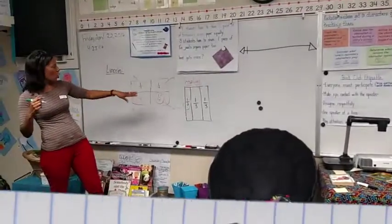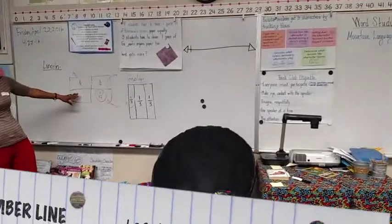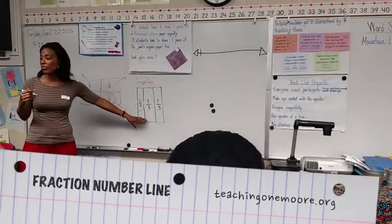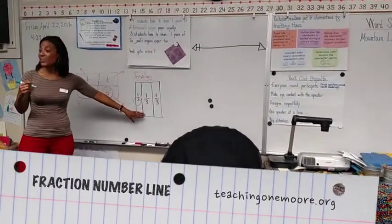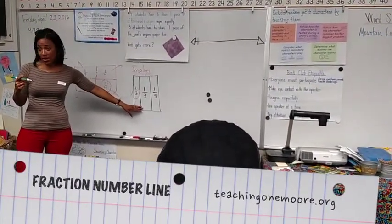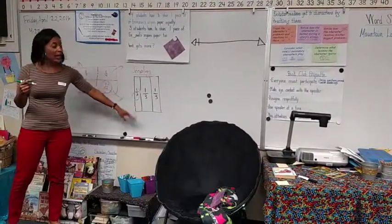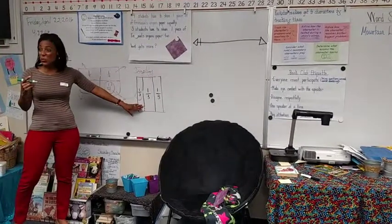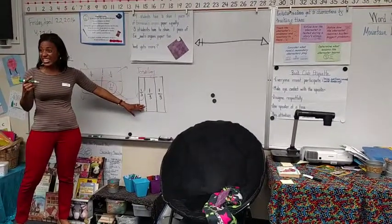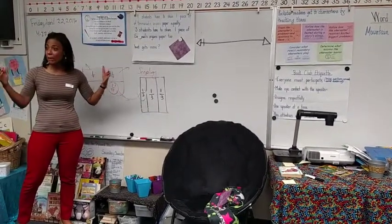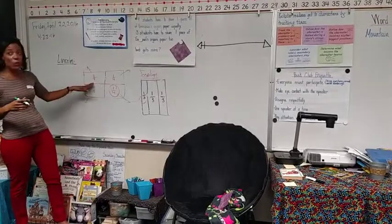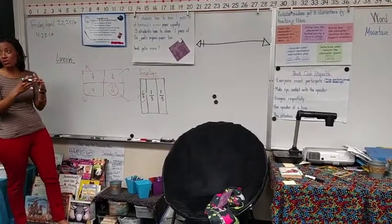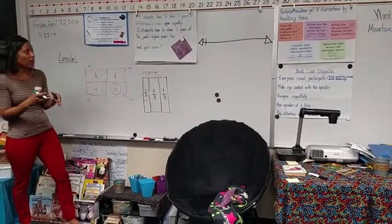This is a paper. One-fourth is smaller than one-third — is that right? That's what you guys said. You said because three people are sharing this, they're going to get a bigger piece, and if there's four kids sharing this, they're going to get a smaller piece.